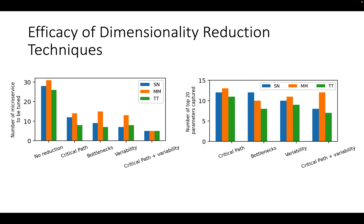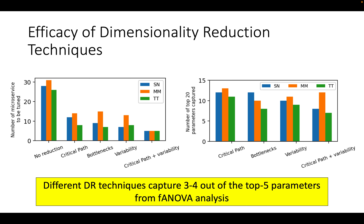Now we move on to the efficacy of dimensionality reduction techniques. On the left graph, we have the number of microservices to be tuned when employing different dimensionality reduction techniques for the three benchmarking applications — SN for social networking, MM for media microservices, and TT for train ticket. On the right graph, we have the number of top 20 parameters from FIOVA analysis that are captured by different dimensionality reduction techniques. As you can see, critical path plus variability has the least number of microservices to be tuned. Different dimensionality reduction techniques capture three to four out of the top five parameters from FIOVA analysis, even though they are not able to capture all top 20 parameters.